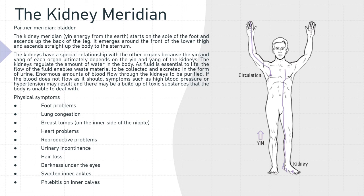The physical symptoms associated with kidney meridian imbalance are foot problems, lung congestion, breast lumps on the inner side of the nipple, heart problems, reproductive problems, urinary incontinence, hair loss, darkness under the eyes, swollen inner ankles, and phlebitis on the inner calves.